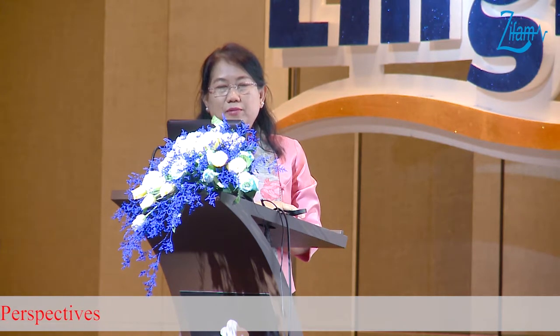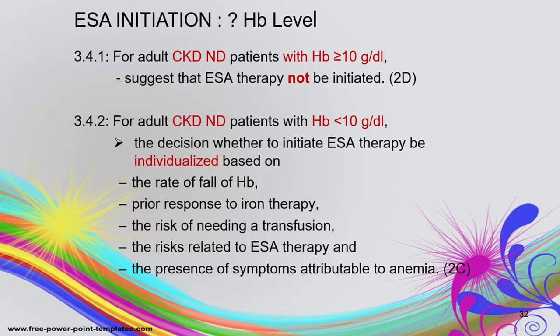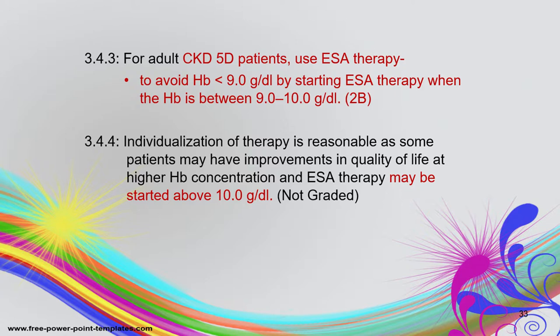Before giving ESA, we must exercise caution if there is active malignancy, history of recent stroke, or history of malignancy. At what hemoglobin level should we start ESA? If hemoglobin is more than 10, it is usually not recommended to initiate. If less than 10, we can start ESA but need individualization. In CKD stage 5, ESA therapy should be started before hemoglobin falls below 9 — so start around 10.